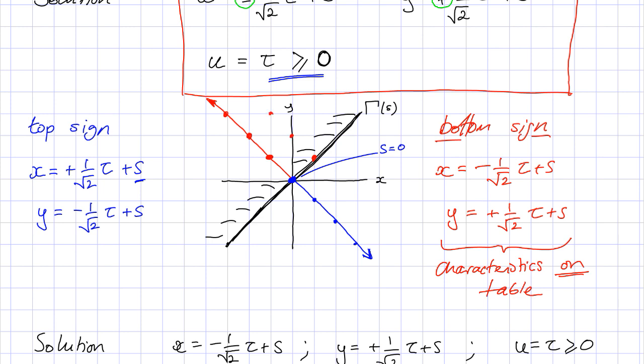These are always going to be straight lines here. So you can see that I've got a characteristic here, and one here, and one here, and one here.